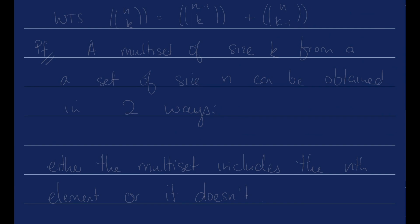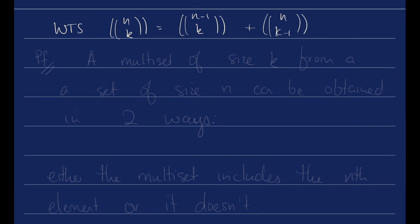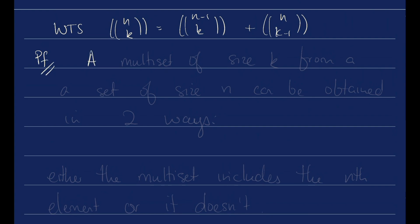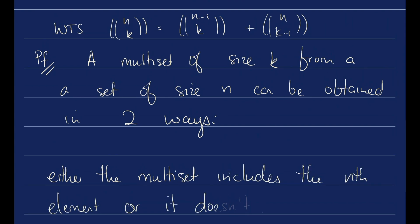So let's see if we can prove this. We want to show that n multi-choose k is equal to n minus 1 multi-choose k plus n multi-choose k minus 1. Here's the proof. A multi-set of size k from a set of size n can be obtained in two ways. The idea is either the multi-set includes the nth element or it doesn't.